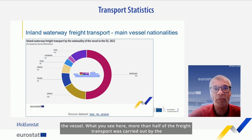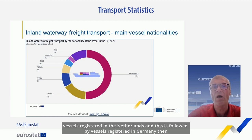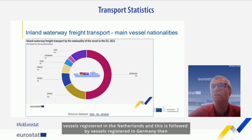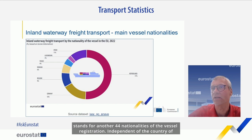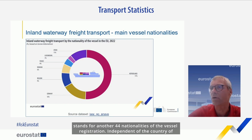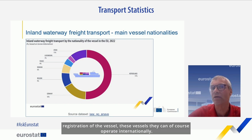This slide displays inland waterway freight transport broken down by the nationality of the vessel. More than half of the freight transport was carried out by vessels registered in the Netherlands, followed by vessels registered in Germany, then Belgium, Romania, France, and Luxembourg. There is also a category 'other', which stands for another 44 nationalities of vessel registration. Independent of the country of registration, these vessels can of course operate internationally.